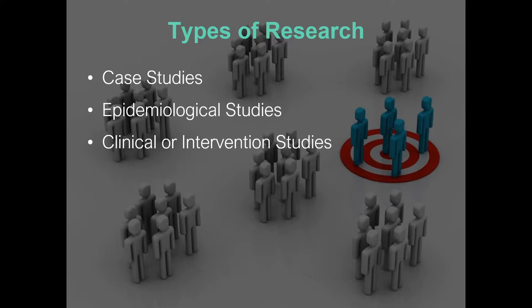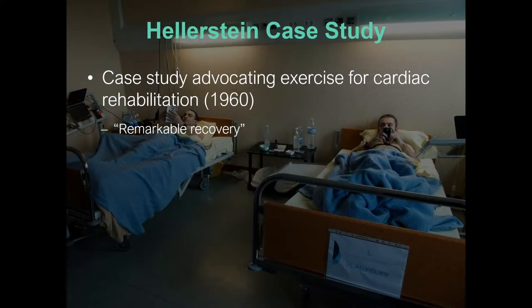A brief recap of each of these study types, starting with one of the first observations of how exercise impacts disease — the Hellerstein case study on rehabilitating patients with acute cardiac impairments. In 1960, it was still not accepted that exercise could be used as a treatment, certainly not for people with heart problems. Exercise raises heart rate and makes the heart work harder, which seemed counterintuitive for someone with an acute cardiac injury. Hellerstein was convinced that ECG abnormalities could be improved, and his case study showed remarkable recovery in those few patients.